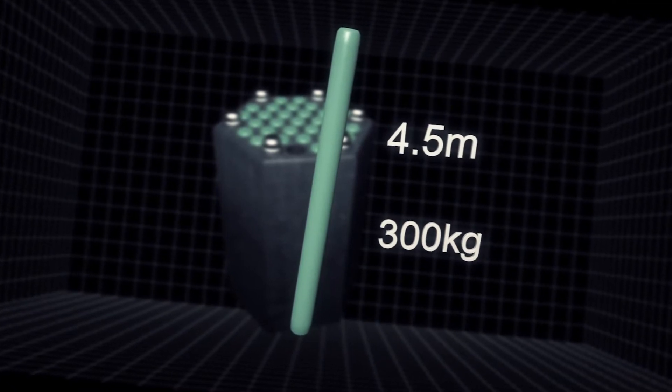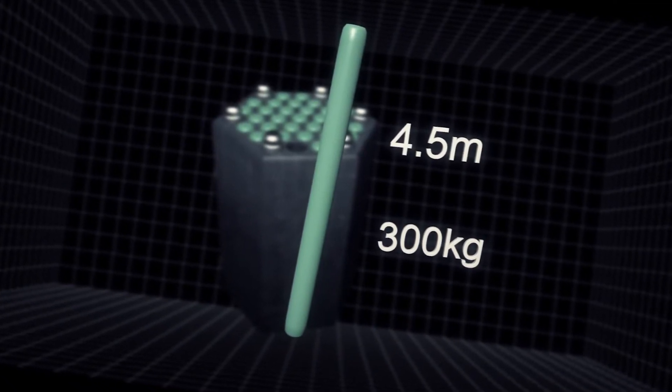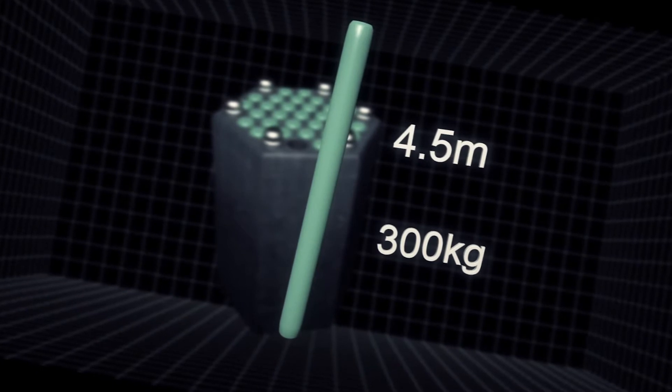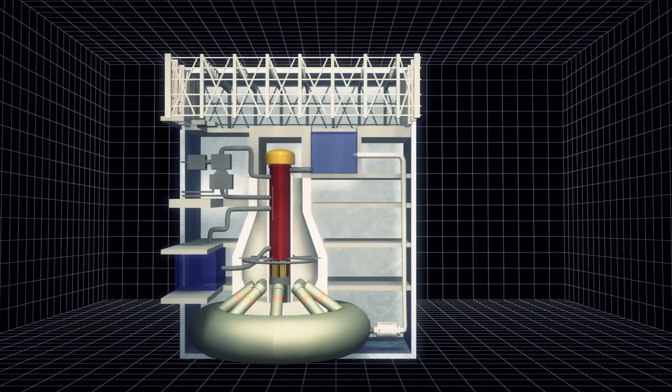Used rods continue to radiate heat and thus need to be stored in circulating water. A stable frame will be constructed next to the reactor.